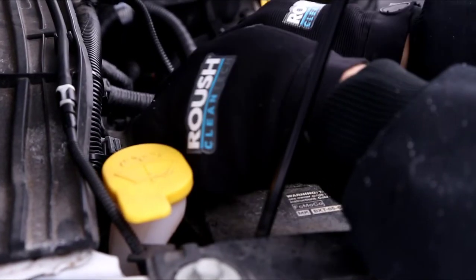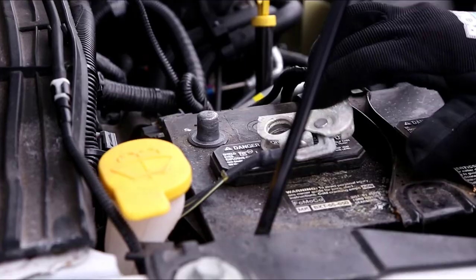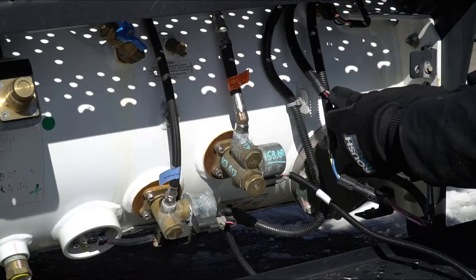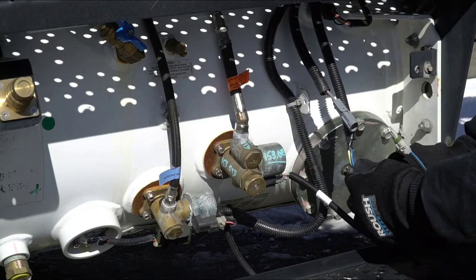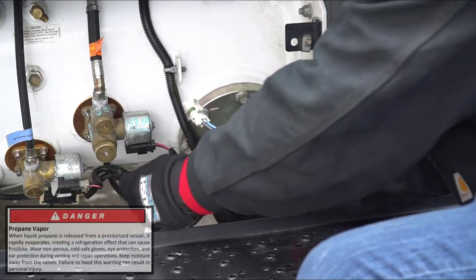Once the tank is verified to be empty, disconnect the negative battery terminal. Disconnect the external fuel pump connectors located on the tank access flange. Next, remove the access flange.